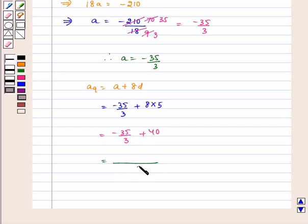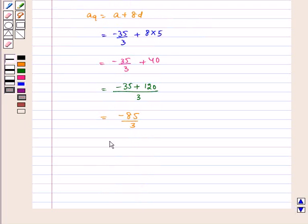Now taking LCM we get 3 so we get here minus 35 plus 120 which is equal to minus 85 by 3. Therefore A9 is equal to minus 85 by 3.